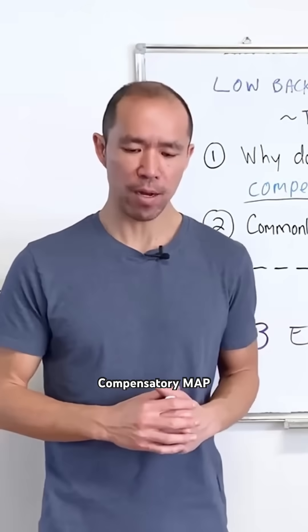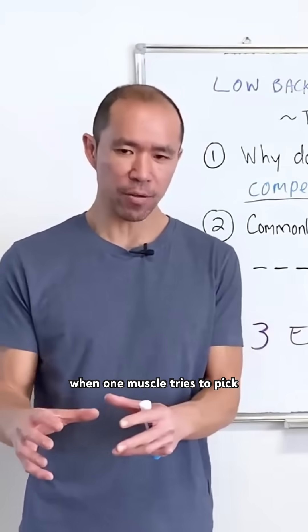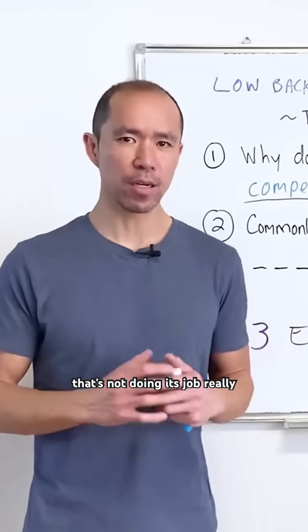So what is a compensatory map? A compensatory map basically is when one muscle tries to pick up the slack for another muscle that's not doing its job.